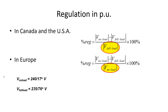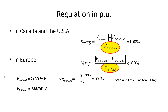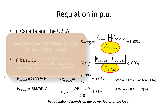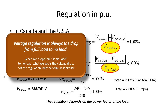Let's have an example. The no-load voltage is 240∠17° and the full-load voltage is 235∠76°. We compare only magnitudes — what a voltmeter would read. In America, the regulation is (240 − 235)/235 = 2.13%. In Europe, the same situation gives 2.08%. The regulation depends on the power factor of the load. Note that voltage regulation always refers to the drop from full load to no load.